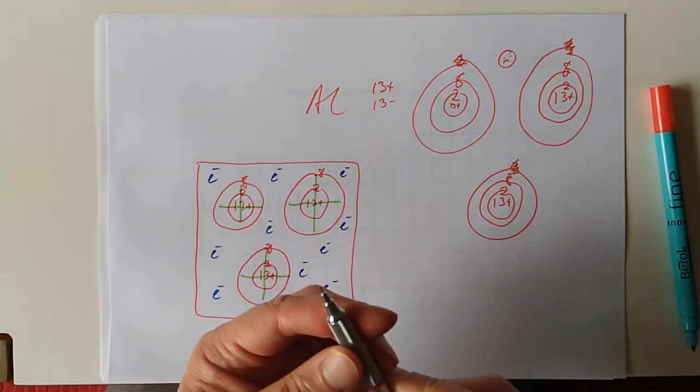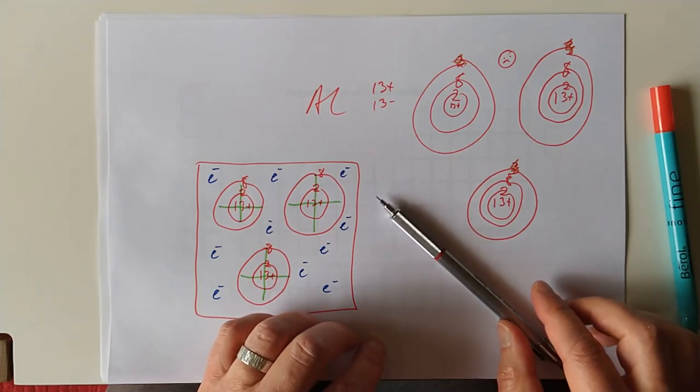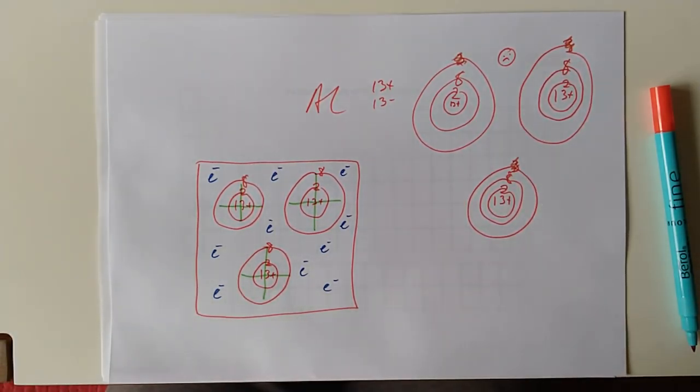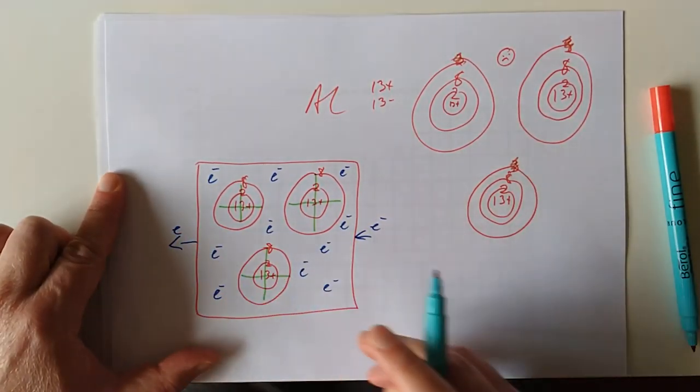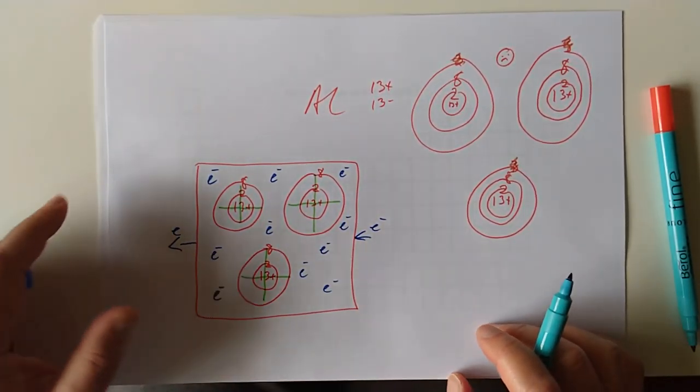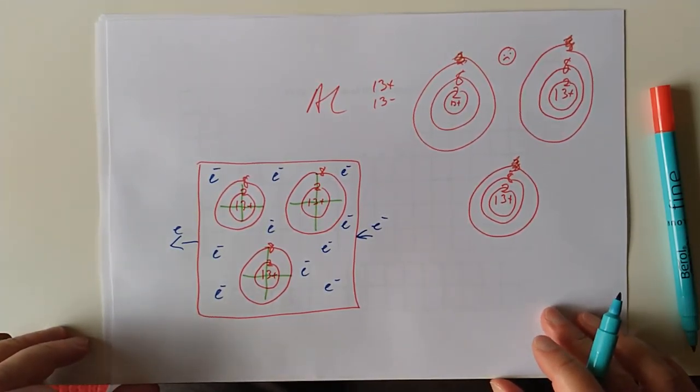Hence the slightly trite textbook phrase, which are ions surrounded by a sea of delocalised electrons. If we fire an extra electron on here, it goes and fires another one out the end, quite happily like a domino chain. That is why they conduct electricity so well.